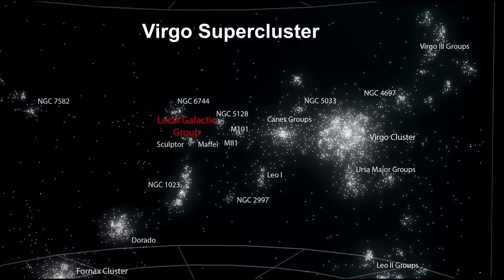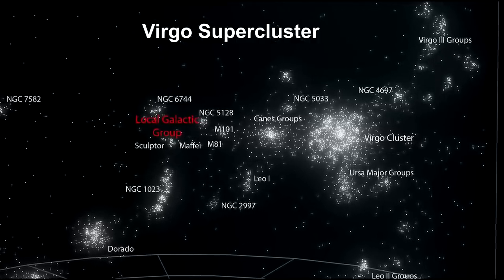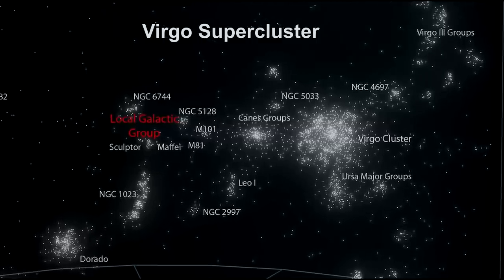This cluster of galaxies is itself part of the Virgo supercluster, itself belonging to an even larger structure, the Laniakea supercluster.